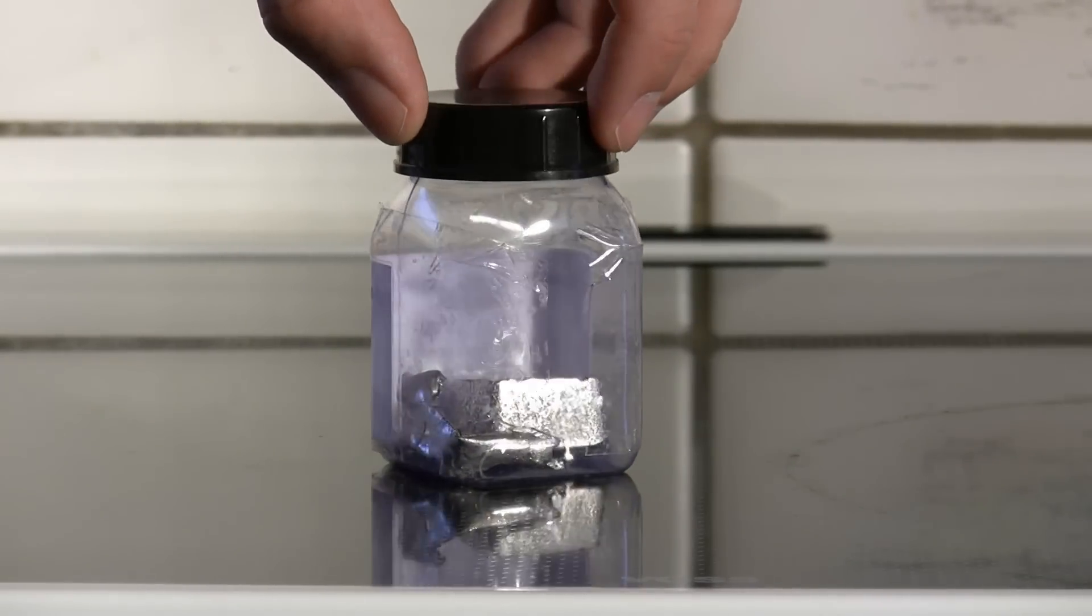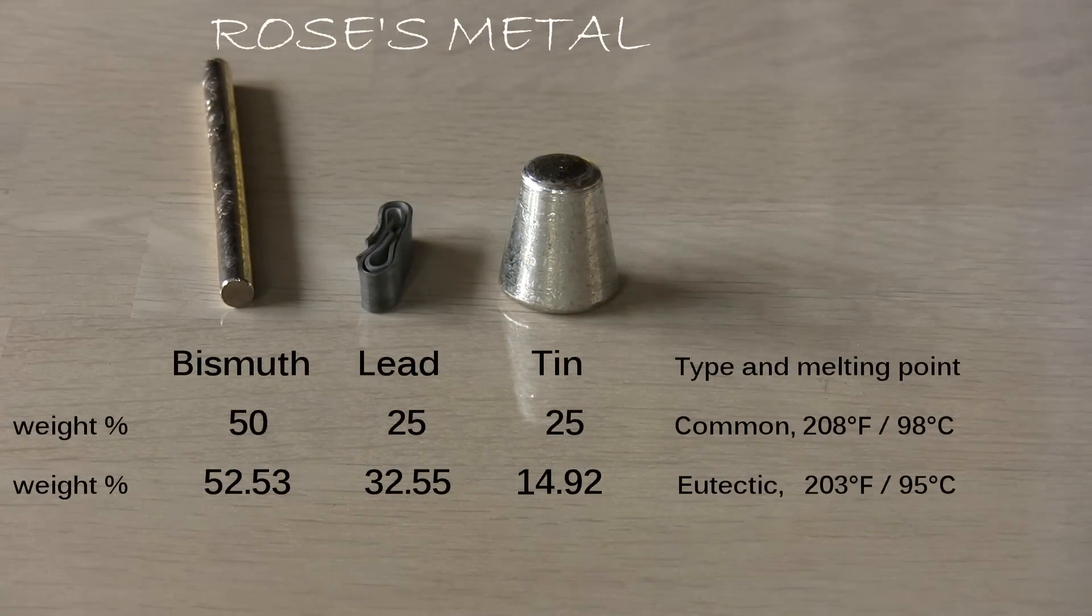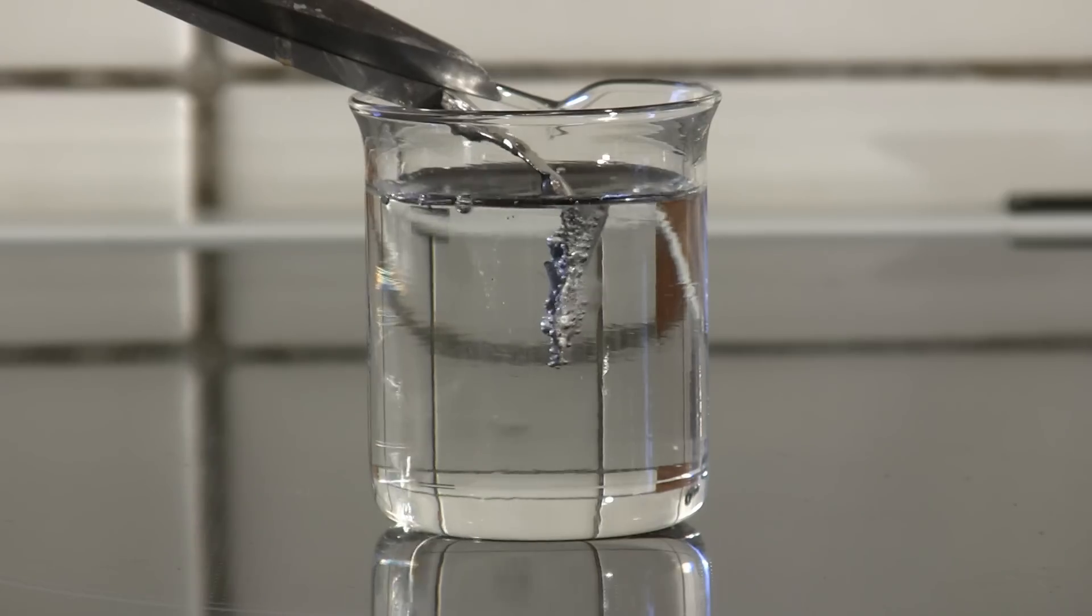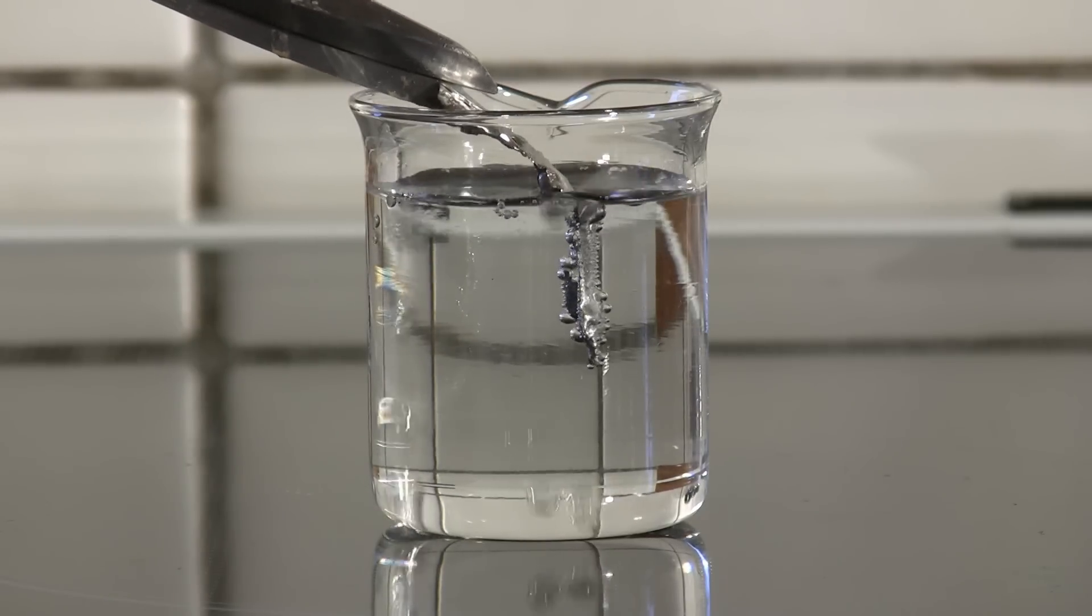This is Rose's metal which is made of bismuth, lead and tin. My sample is eutectic meaning it has the mixing ratio where all components melt at the lowest possible temperature. In this case at 203 degrees Fahrenheit so boiling water at 212 should melt it.